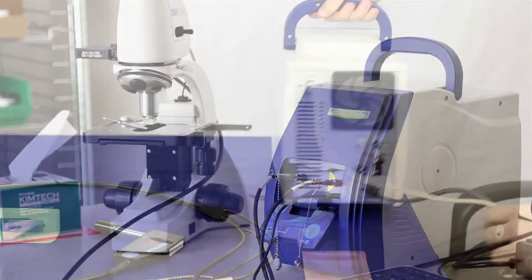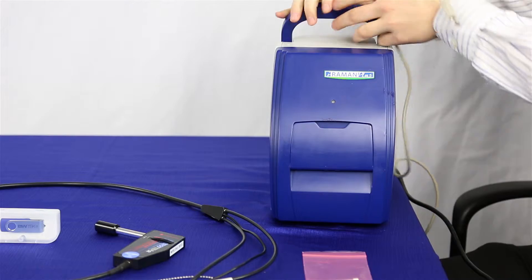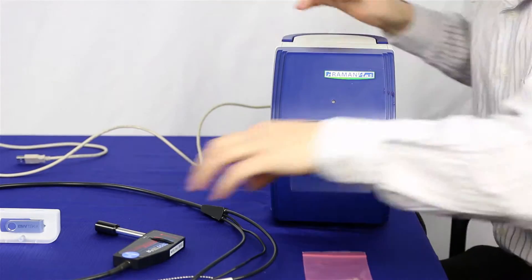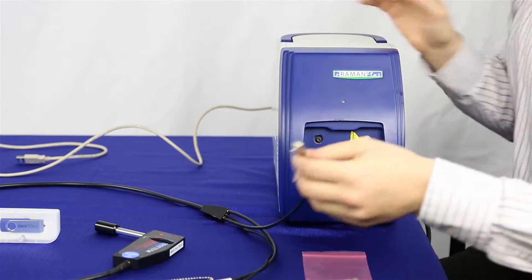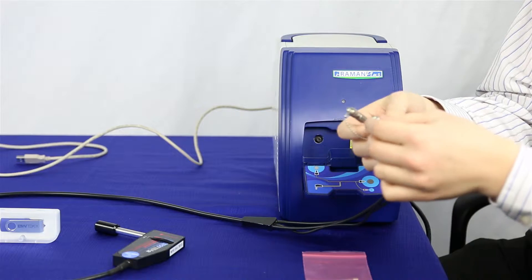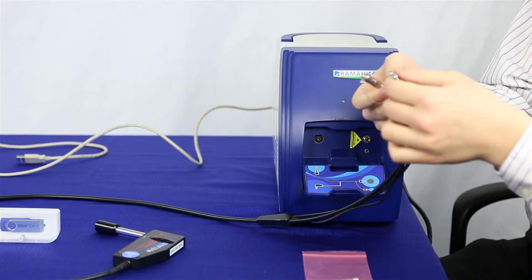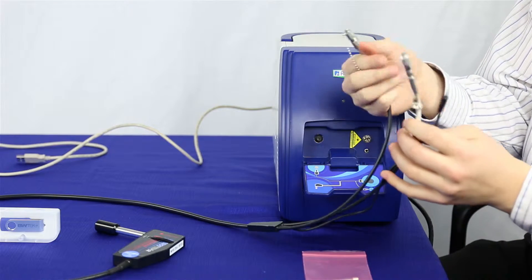Now that everything's plugged in, we're going to turn it around and we're going to work on the front. You're going to open the flap and you're going to take your Raman Probe. You'll see your Raman Probe has two different fibers: one is your collection fiber and one is your excitation fiber.